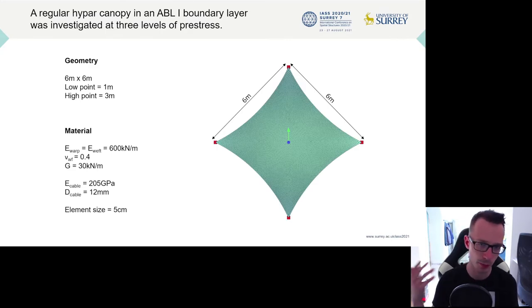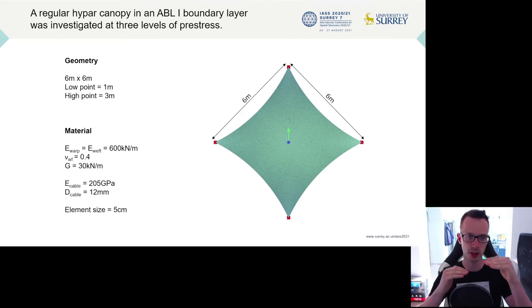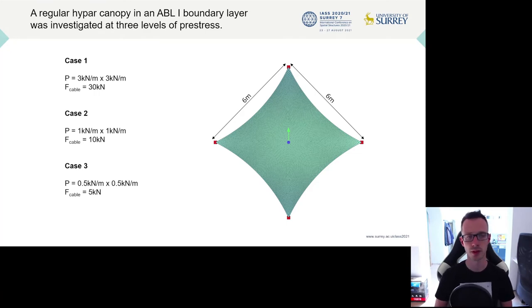For this, we observed a regular hypar structure, 6x6 meter in ground plan, low points 1 meter above the ground level, high points 3 meters above the ground level. As material properties, we chose a set of representative material properties, but they are virtual, so they are not derived from a certain material yet. More importantly, of course, are the pre-stress levels. We have observed three cases, and because we wanted the geometry to remain constant, as we reduced the membrane pre-stress, we also reduced the cable tension. So this makes sure that the starting geometry is exactly the same.